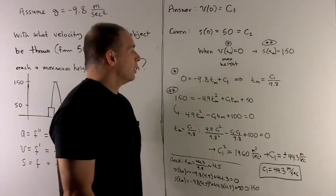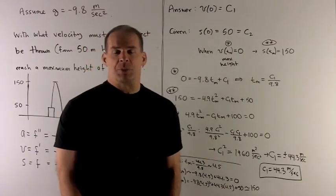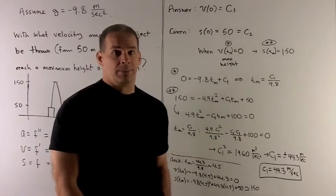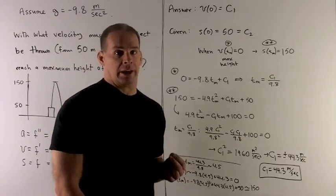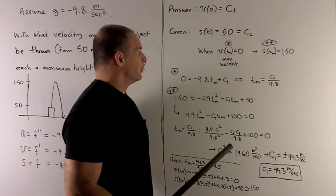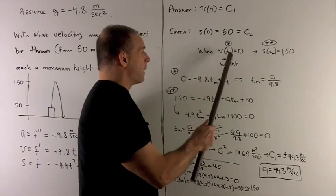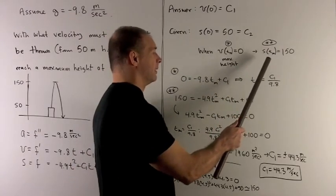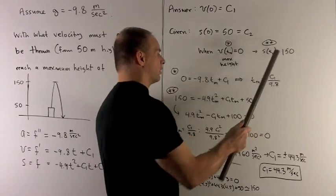What else do I have? We're interested in a special time, which I'll call t_m. T sub m is going to be the time when we reach maximum height. So we also have the equation: when we're at the time of maximum height, the velocity is zero. And we also have at the time of maximum height, the position is 150.